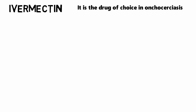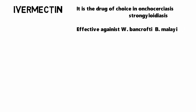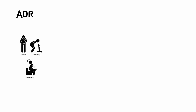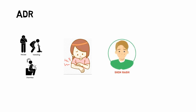The next important drug is ivermectin. It is a drug of choice in onchocerciasis and strongyloidiasis, and is effective against Wuchereria bancrofti and Brugia malayi. The mechanism of action is that after administration, ivermectin activates glutamate-gated chloride channels and increases GABA transmission in worms, which results in hyperpolarization and paralysis of the worms, leading to death or phagocytosis of the worms.